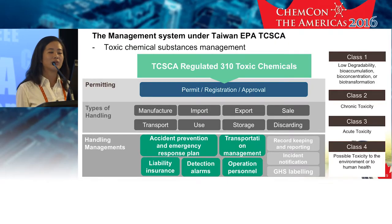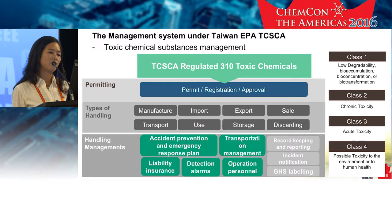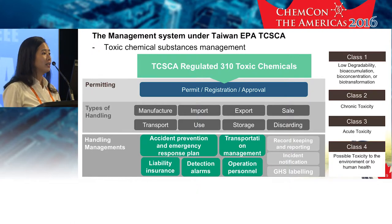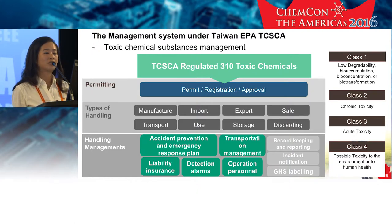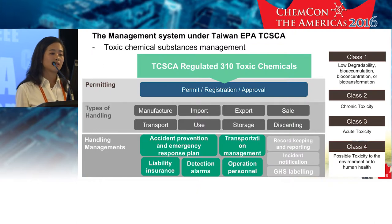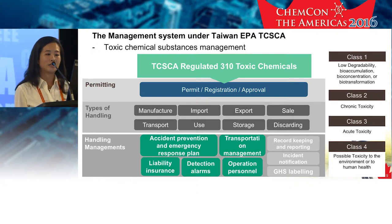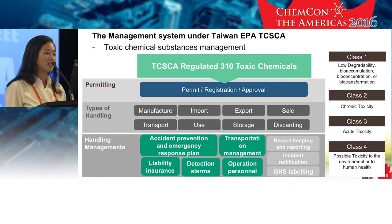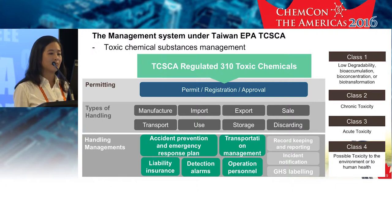A template with less data requirements will be tailored and given for those designated chemicals individually. Other than chemical registration, when we narrow down to the toxic chemical substances, there are some more rigid management measures, and you may have to check if you are importing any toxic chemicals. EPA has announced 310 toxic chemicals based on their inherent hazards, classified into classes 1 to 4 when they conform to the toxic chemical substance classification criteria.